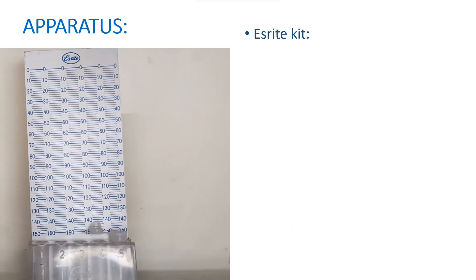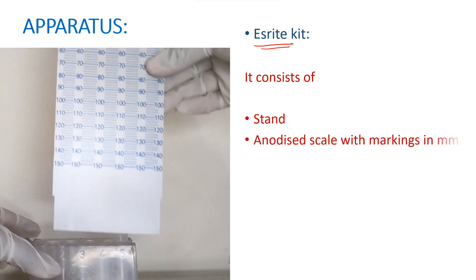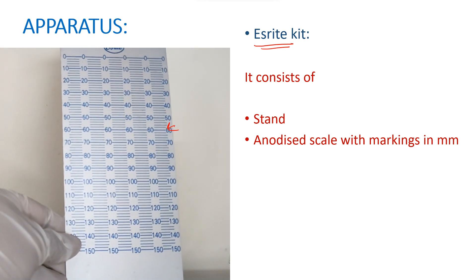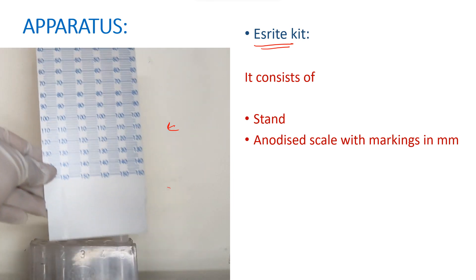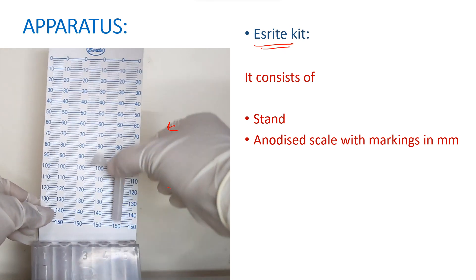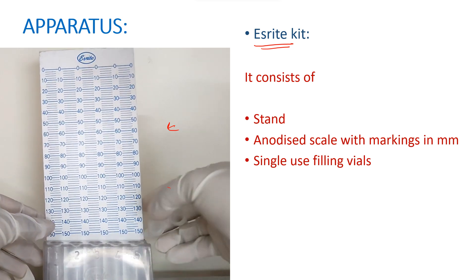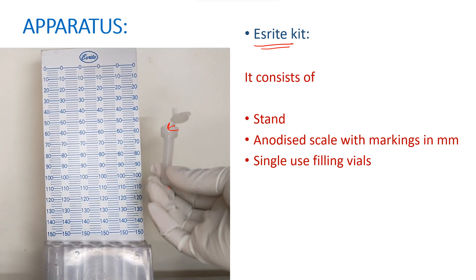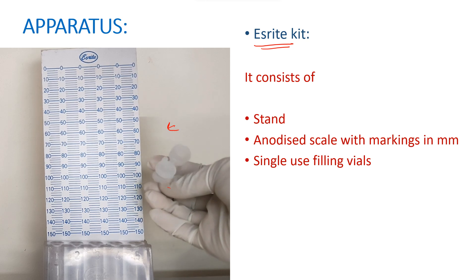Now we will see the apparatus needed. We need what is known as the S-rite kit. It consists of a stand, an anodized scale with markings starting from 150 to 0 to 150 in millimeters, and single-use filling vials in which we take anticoagulated blood.